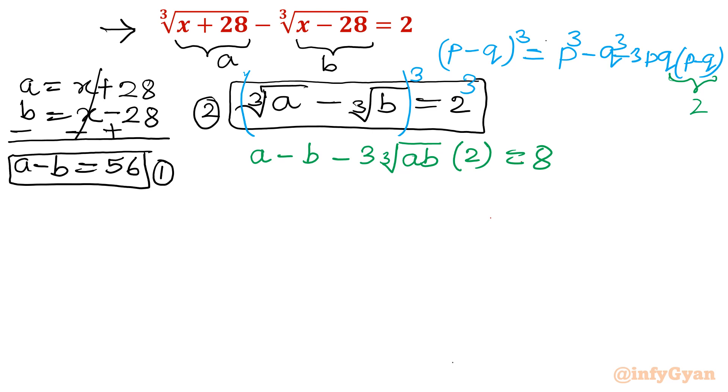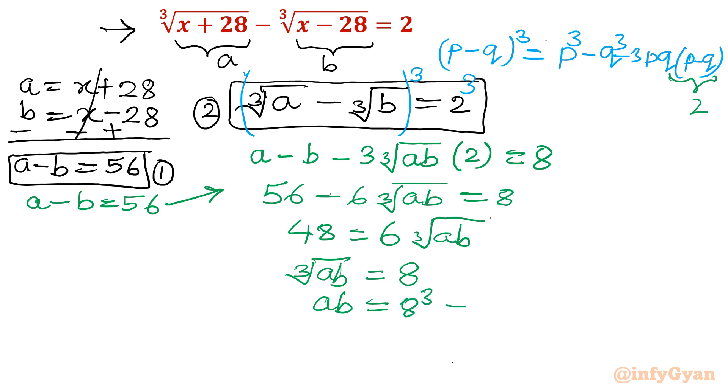Now a minus b is 56. You can see equation number 1. I will apply here. So 56 minus 6 cube root of ab equal to 8. Now I will take 6 term to the right and 8 to the left. So it will become 48 is equal to 6 times cube root of ab. So cube root of ab will become 48 over 6, which is 8.